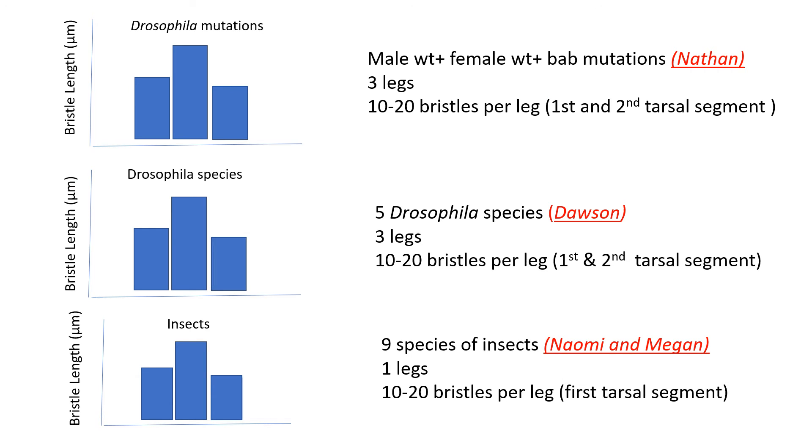Here are the three groups: Nathan can study the wild type and the mutations. Dawson can start measuring the mutants. Naomi and Megan can work on the insects together, on the bristles in other insects.